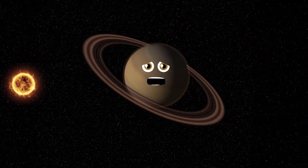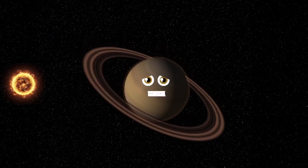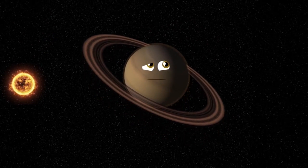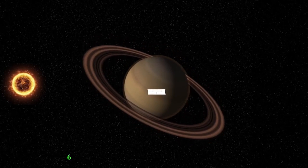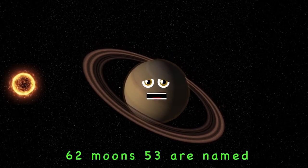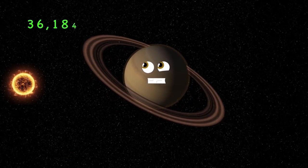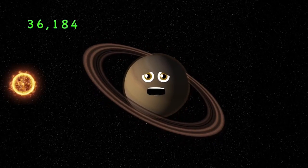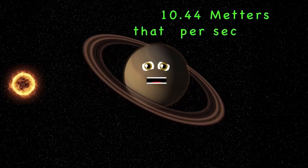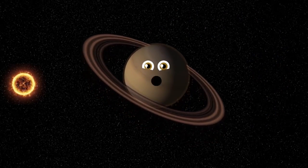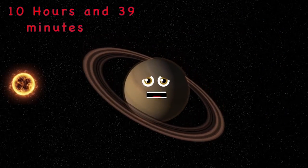I am Saturn, the sixth planet from the sun. I am the second largest planet in our solar system. Out of my 62 moons, 53 are named. I am a gas giant, all astronomers claim. 36,184 is my radius in miles. 10 hours and 39 minutes long is one day on Saturn.